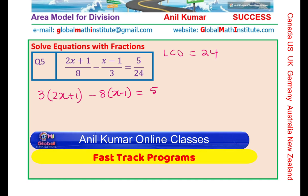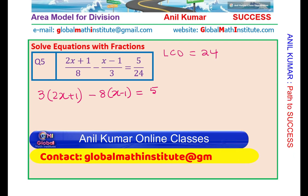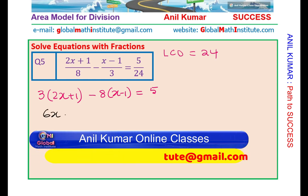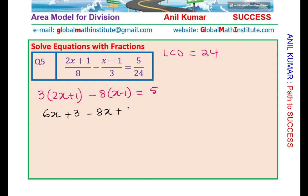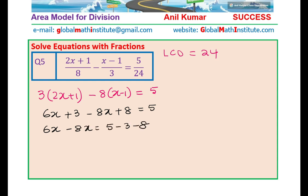Opening the brackets using the distributive property: 3 times 2x is 6x, plus 3, minus 8x, minus minus becomes plus 8, equals 5. Working with variables on one side: 6x minus 8x is minus 2x. Numbers on the other side: 5 minus 3 is 2, and 2 minus 8 is minus 6. So x equals minus 6 over minus 2, and minus over minus becomes positive, giving x equals 3.